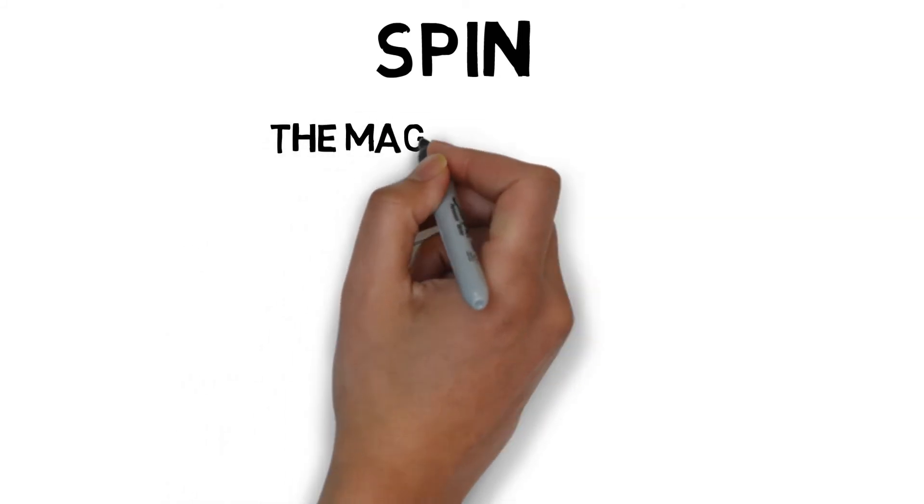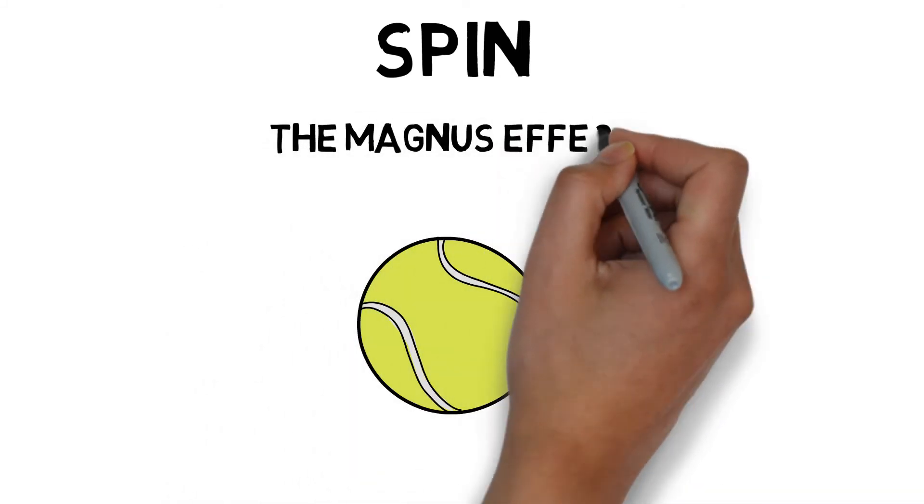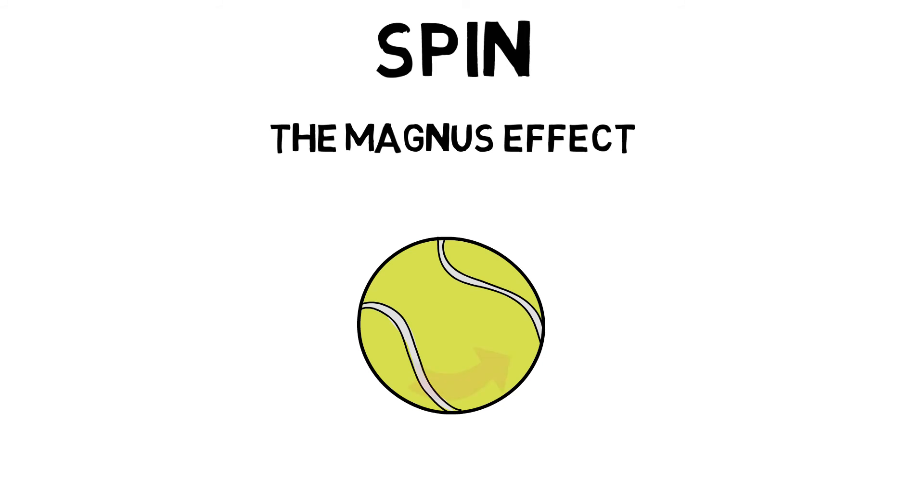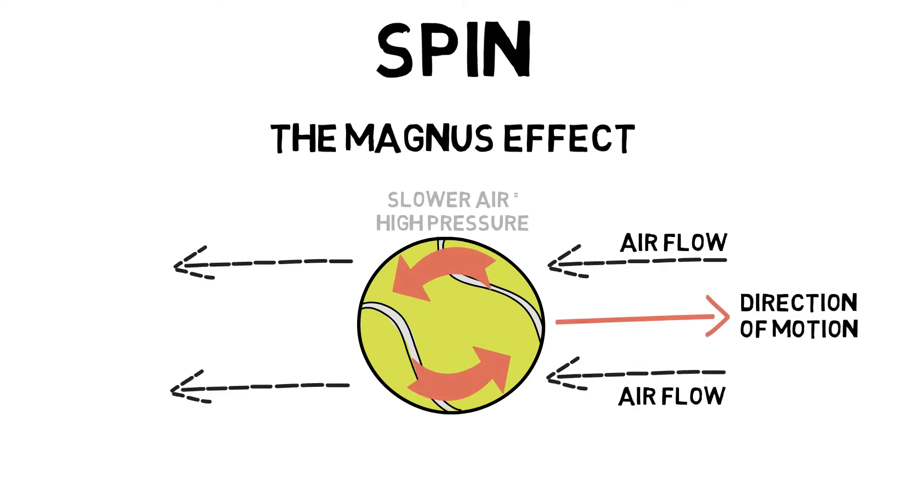The Magnus effect applies to the spin on the ball that slows down air flow on one side of the object and speeds it up on the other side. This creates a pressure difference that causes the ball to move.